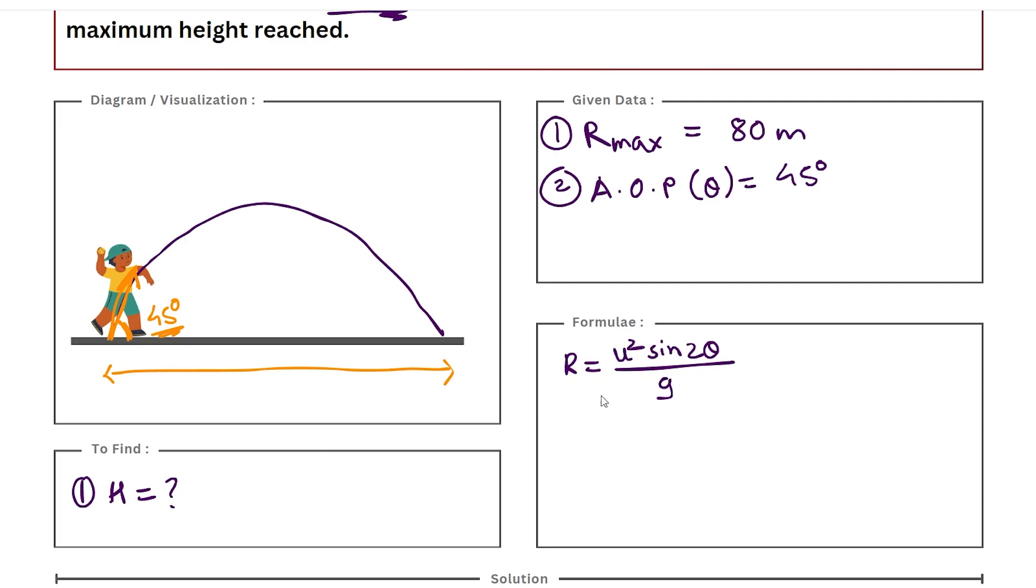Okay, but this formula is for the normal case. But when we know that our theta is equal to 45 degrees, if we substitute this value of theta as 45 in this above formula, we get a new formula for R_max and you can use this formula for other sums as well. This is u²/g.